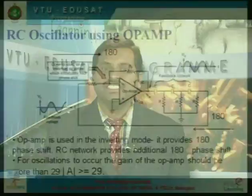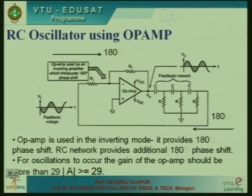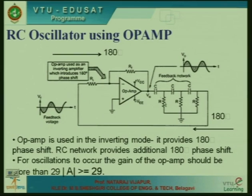We can have one more oscillator using an op-amp in inverting configuration — the RC phase shift oscillator using an op-amp. The operational amplifier is connected in inverting configuration, which provides a 180 degree phase shift. It is used as a voltage gain amplifier. The feedback network consists of 3 RC sections, each introducing 60 degrees phase shift, together producing 180 degrees. This phase-shifted signal is available as input to the inverting terminal of the op-amp.